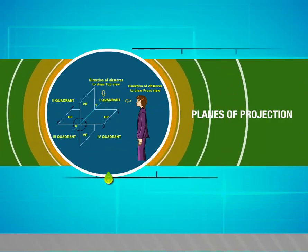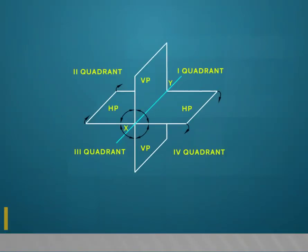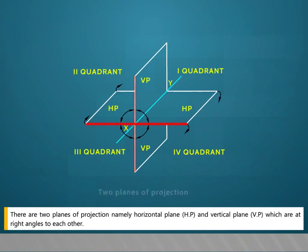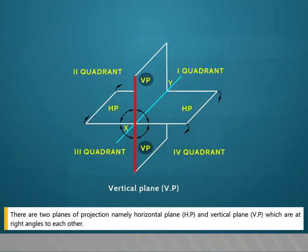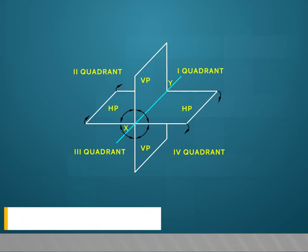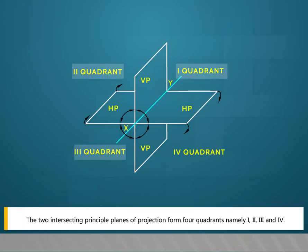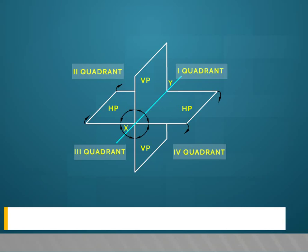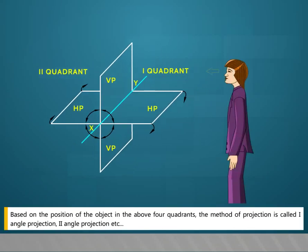In this video we are going to see about the planes of projection. There are two planes of projection: the horizontal plane (HP) and vertical plane (VP), which are at right angles to each other. The line of intersection of HP and VP is called the reference line, denoted as XY. The two intersecting principal planes form four quadrants. Based on the position of the object in these four quadrants, the method of projection is called first angle projection, second angle projection, etc.